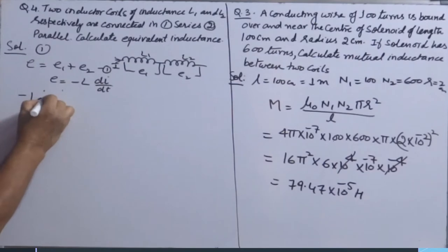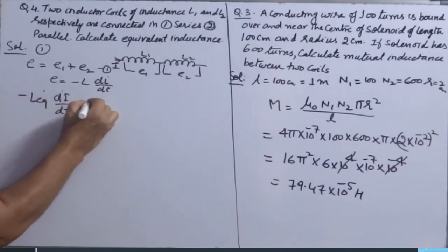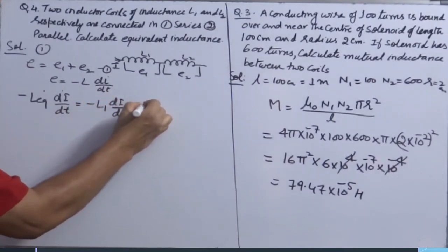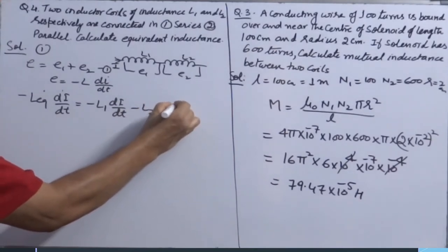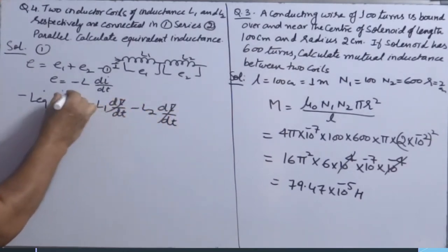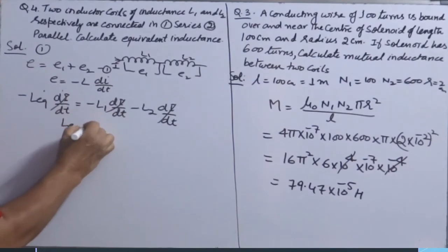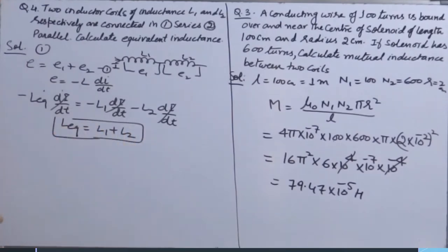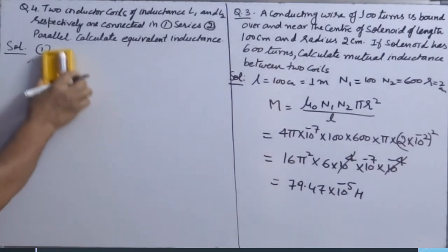Minus L equivalent dI over dT. Current would remain same because it is in series. dI over dT cancels. So L equivalent equals L1 plus L2. Result is exactly similar to series combination of resistors. Let's see second case also here.